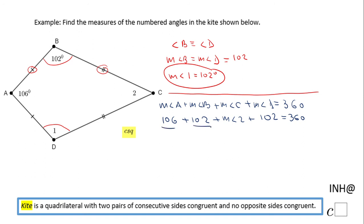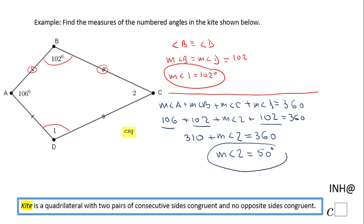Adding the known values: 106 plus 102 plus 102 equals 310. So 310 plus the measure of angle two equals 360. The last step is to subtract 310 from 360, and that gives us 50 degrees. And that's it! If you enjoyed this video, don't forget to click the like button and come back to C Squared for more help. Thank you!